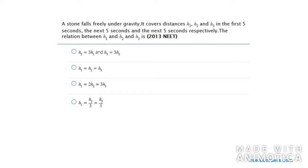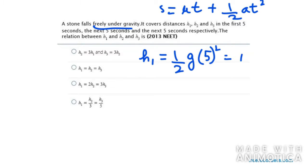The third one says a stone falls freely under gravity. It covers distances h1, h2 and h3 in the first 5 seconds, the next 5 seconds, and 15 seconds respectively. It is actually under gravity, so that means my h1 is half g times 5 square. Using the formula s equals half a t square, this will be half g times 25.